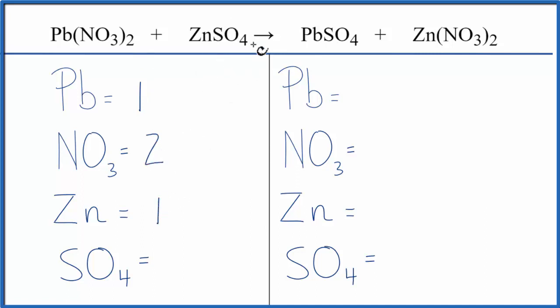One zinc sulfate, that's SO4, another polyatomic ion, and it stays together. So I have one SO4.